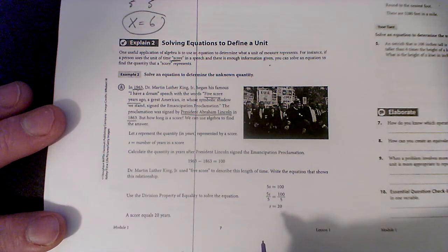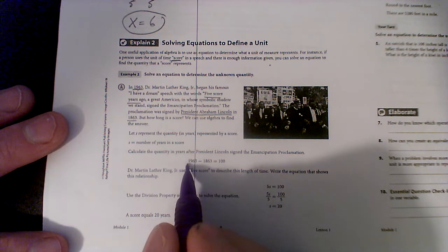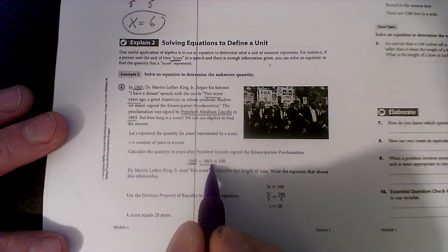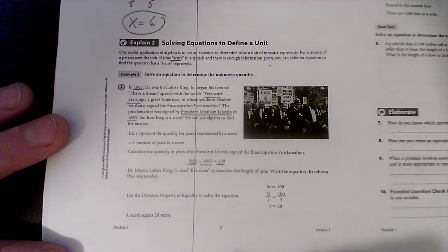The Proclamation was signed by President Abraham Lincoln in 1863, but how long is a score? We can use some algebra to figure it out. If it is now 1963 and it was signed in 1863, we realize that that was a hundred years ago.